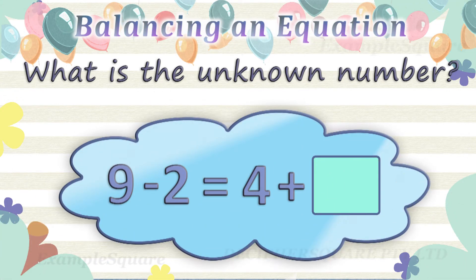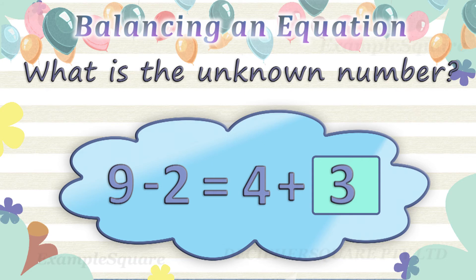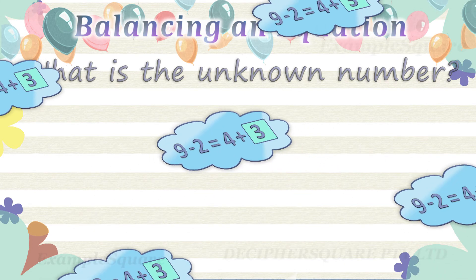In this equation, the left side is 9 minus 2 and the right side is 4 plus an unknown number. 9 minus 2 on the left side equals 7. For this equation to balance correctly, the right side should also be equal to 7. The right side is 4 plus an unknown number. 4 plus 3 equals 7, so the unknown number here is 3.